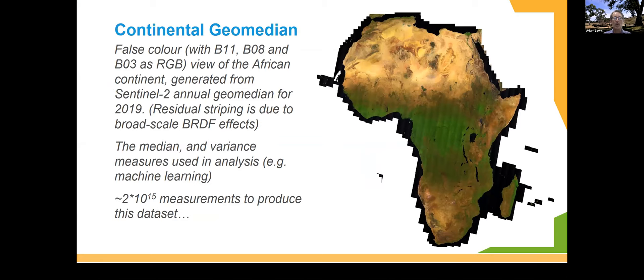Once we put that into a data cube, we can start to do amazing things we couldn't do before. We have a beta of a continental geomedian, which is a statistical summary of every pixel of every image in 2019 in Africa. That produces a very stable median image — a multidimensionally median image — but also measures around that: the central tendency, and what's the variance around it, which become very important statistics. The scale of this is difficult — if you count each pixel and each band as a measurement, you're talking about in excess of 10 to the 15 measurements being processed just to make that data set. It's about a thousand times the numbers when we did the first data cube in Australia.